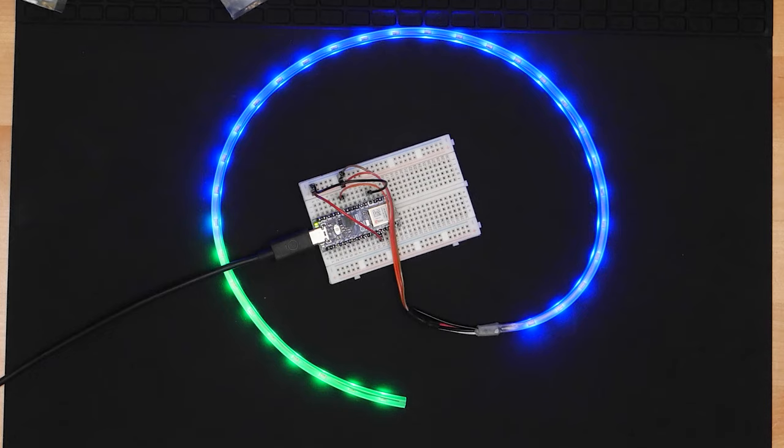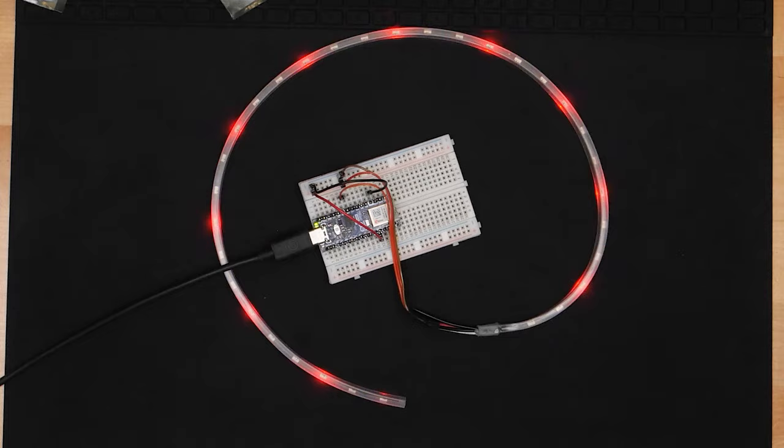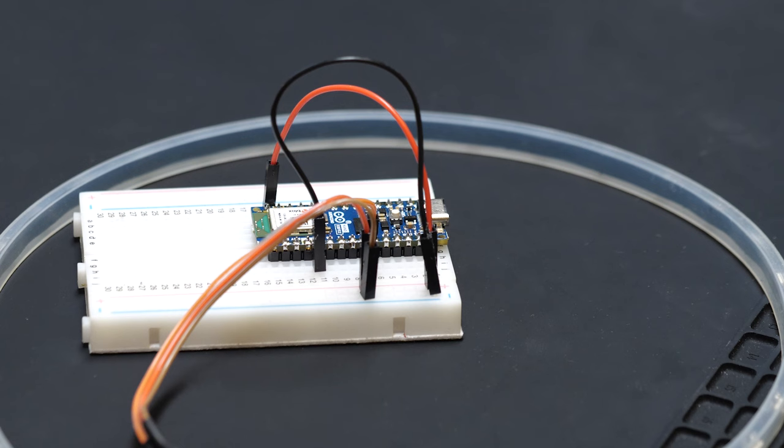For this project, you'll need some RGB LEDs and a WiFi microcontroller. I'm using a strip of WS2812 addressable pixels, also called NeoPixels, and an Arduino Nano ESP32 WiFi microcontroller board.